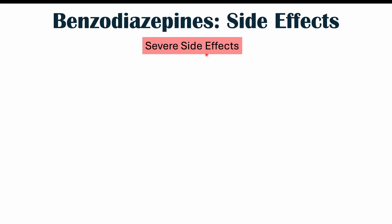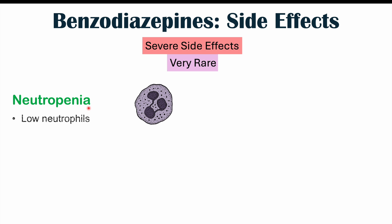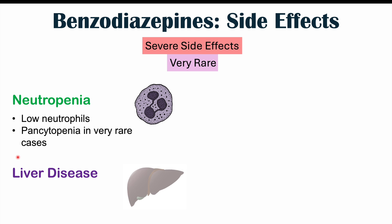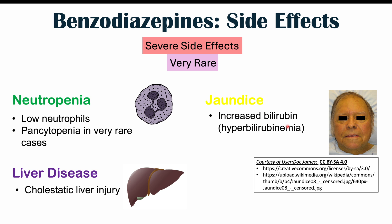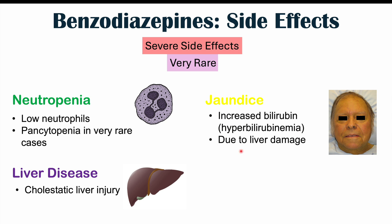Rare but severe side effects of benzodiazepines include neutropenia (low neutrophil count), pancytopenia (low red blood cells, platelets, and white blood cells), cholestatic liver injury, and jaundice due to hyperbilirubinemia caused by liver damage from the benzodiazepines.